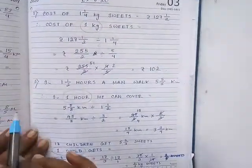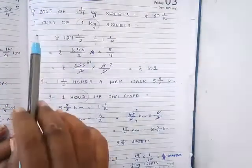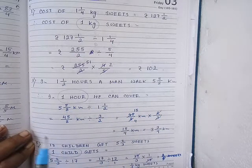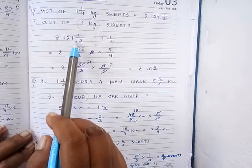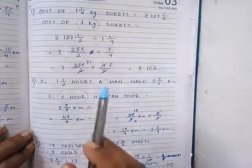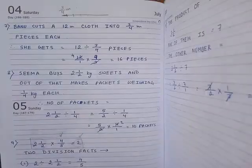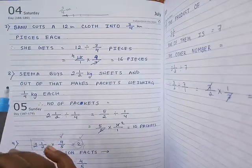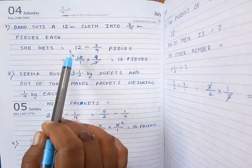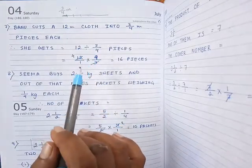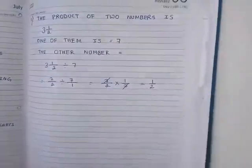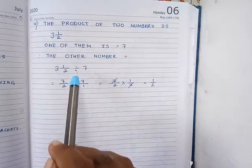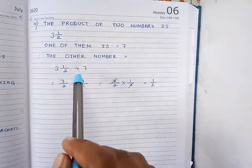The answer is equal to 1/2. In sum number 1, 2, and 5 — the first type — we are finding the cost of 1 kg sweets, how much distance can be covered in 1 hour, and how many sweets one child can get. For this type, we will do division: write down the total cost, then divide it by the quantity, and always mention the unit. In the second type, sum number 7 and 8, we are finding the number of pieces. Write down the total length, then divide by the length of each piece. In the third type, sum number 10, the product is given and one number is given, so we find the other number by division: write down the product, then divide by one number, and you will get the other number.